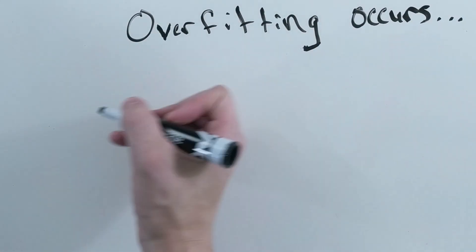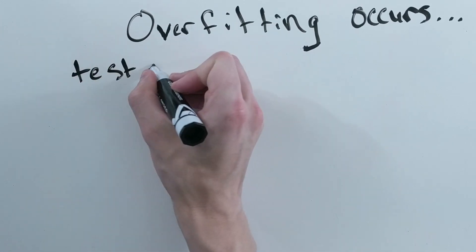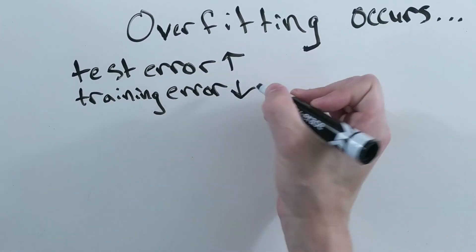You can tell overfitting has occurred in your machine learning model when the error on your test set increases while the error on your training set decreases.